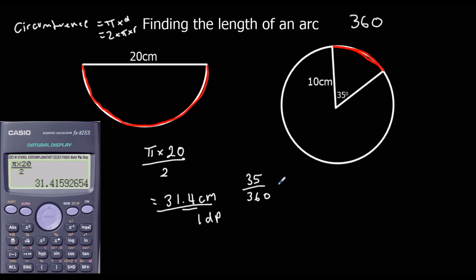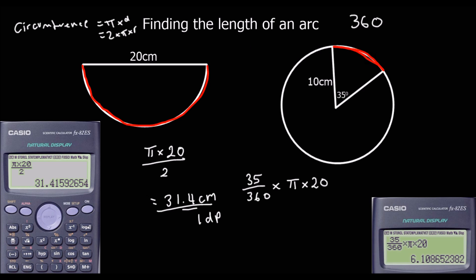Whenever we say 'of', we mean times. So we've got that fraction of the whole circumference, which is pi times the diameter, or 2 times pi times r. Pi times the diameter — which in this case is 20, since the radius is 10. Type this into the calculator and it gives an arc length of 6.1 centimetres to one decimal place. That is the length of this minor arc.